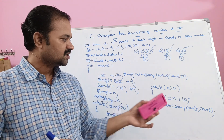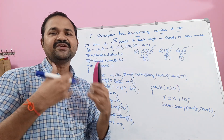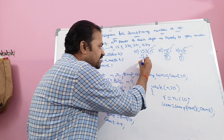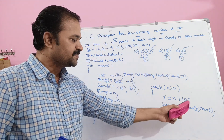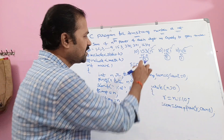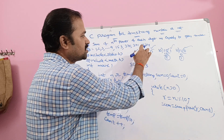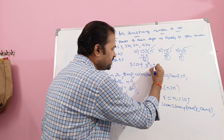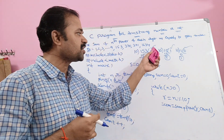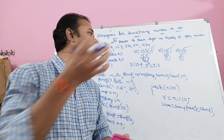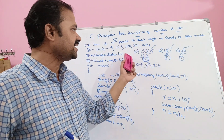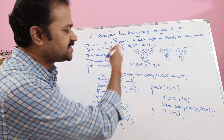Let's trace iteration 1 with n equal to 153. The condition 153 greater than 0 is true. r is equal to 153 modulo 10, which gives r equal to 3. Sum is equal to 0 plus pow(3, 3), which is 27. So sum now contains 27. Operation on digit 3 is complete. Next, n is equal to n divided by 10, so 153 divided by 10 gives n equal to 15.